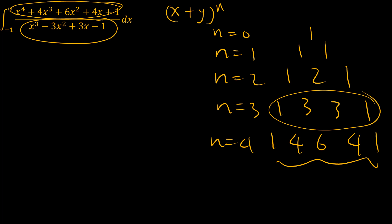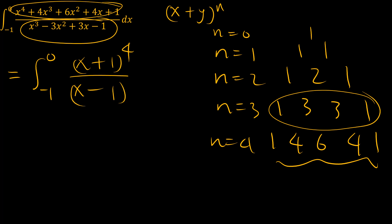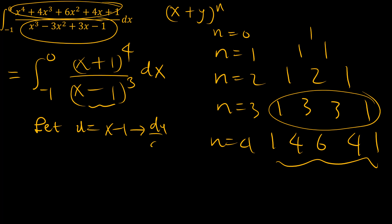So our integral from x equals negative 1 to 0 becomes x plus 1 to the power 4, over x minus 1 to the power 3. Normally, I don't like handling two items like that in the denominator. So the easiest thing is to let u equal x minus 1, such that du equals dx.